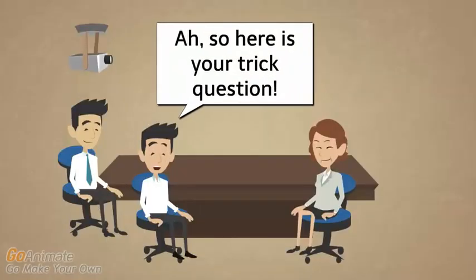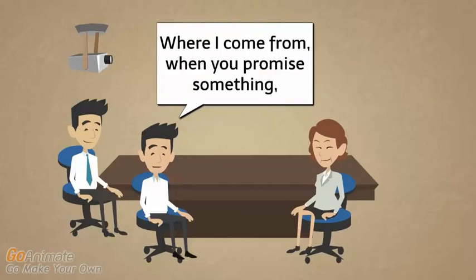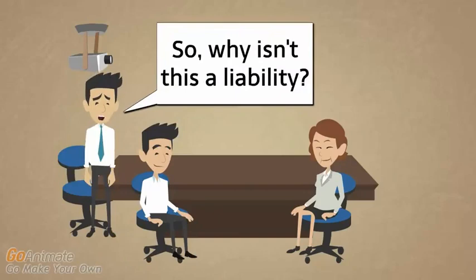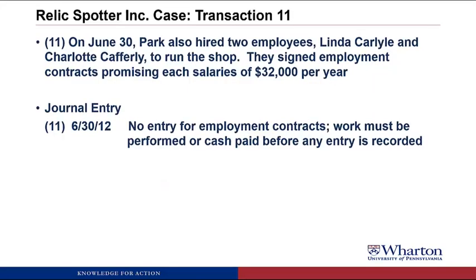When you promise something it becomes an ironclad obligation — so wasn't this a liability? One of the criteria for recording a liability is that the obligation has to be based on some benefits received currently or in the past. We haven't received any benefits from these employees yet because they haven't worked for us. They could quit tomorrow and we wouldn't owe them anything. So it's not until they work for us without being paid that we would record a liability. Since there's no journal entry, there's nothing to post.